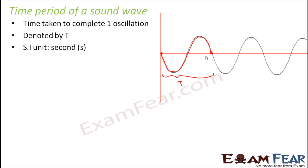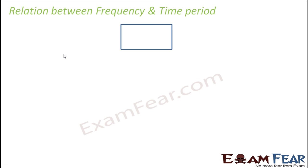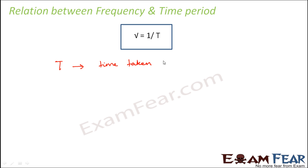There is a very close relationship between time period and frequency. So let us find out that relationship. Frequency is equal to one divided by T, where T is the time period. They are very closely related, and we can derive why this is so.